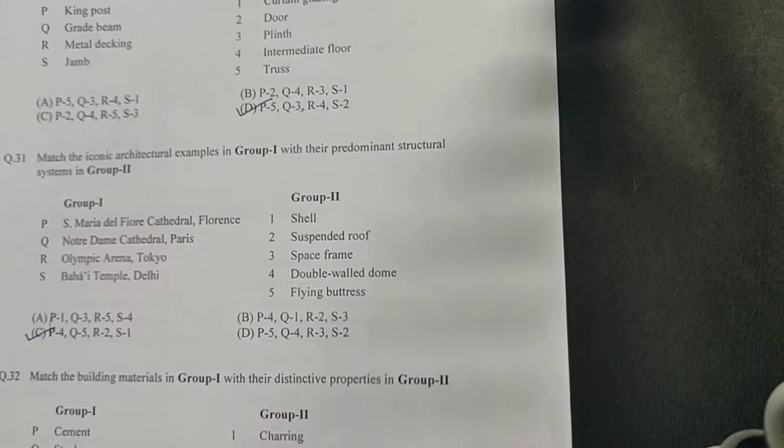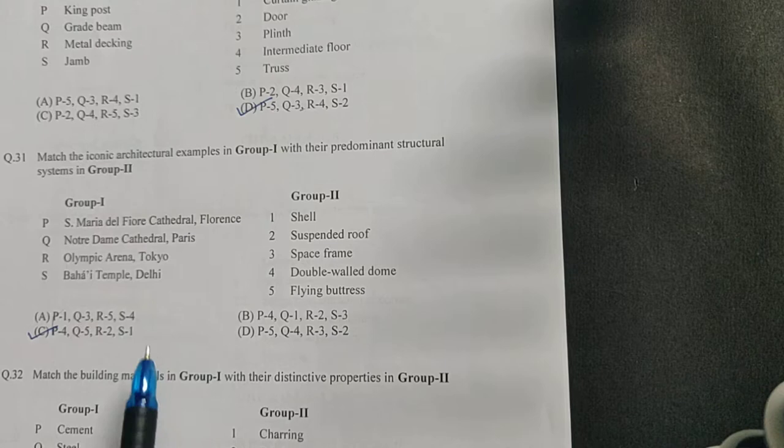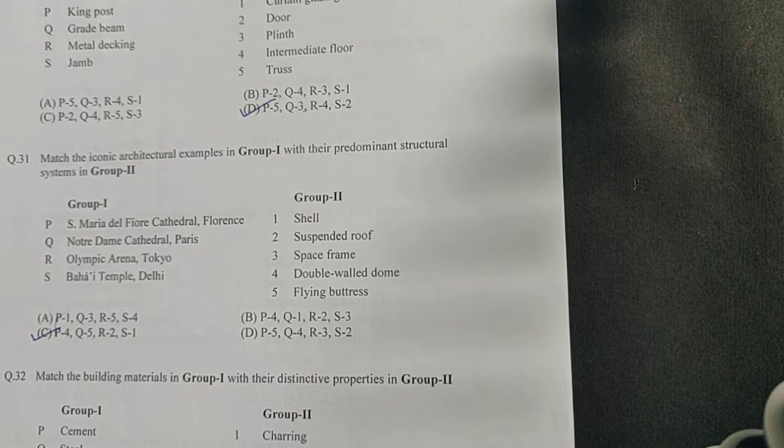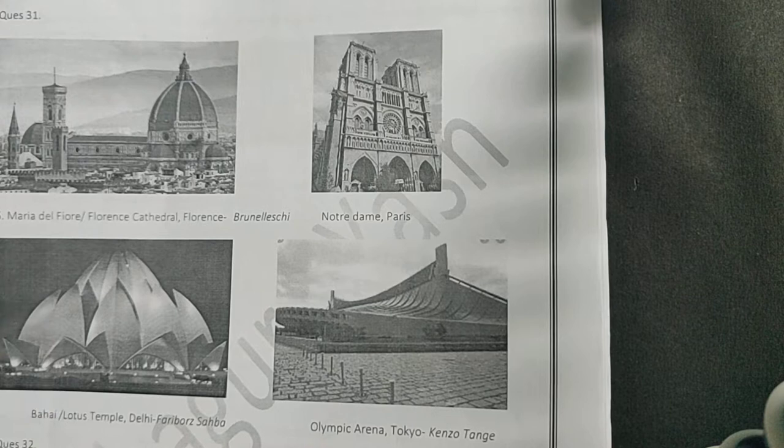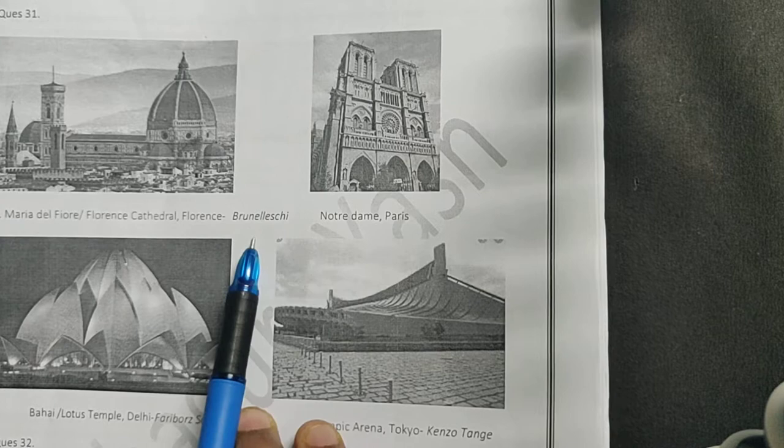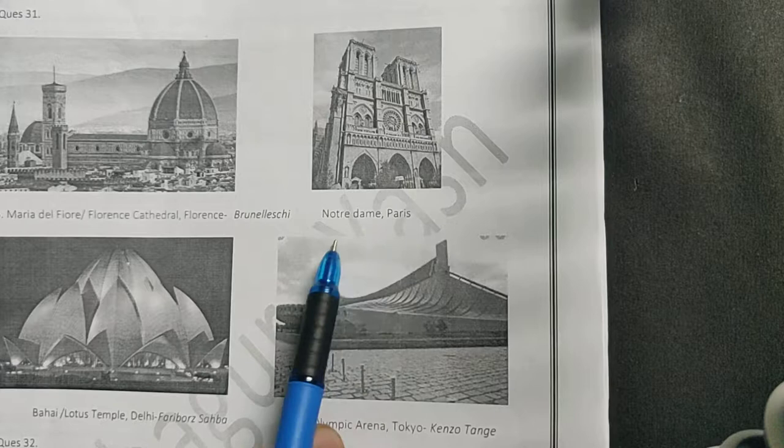The next question. You have some iconic architectural examples of buildings and you need to see what kind of structural system they have. First is Santa Maria del Fiore, also known as the Florence Cathedral in Florence, made by Brunelleschi. It has a double dome. This belongs to Roman architecture.